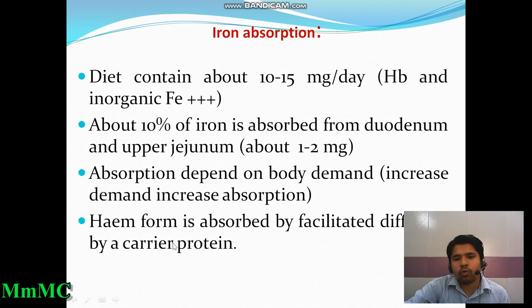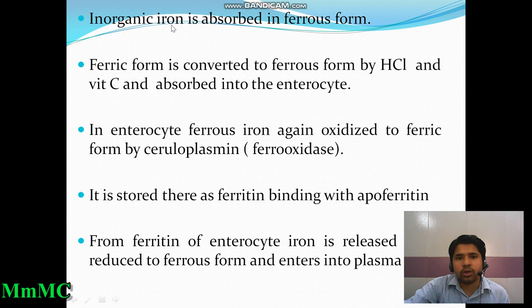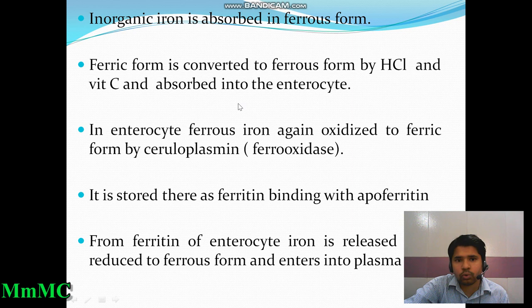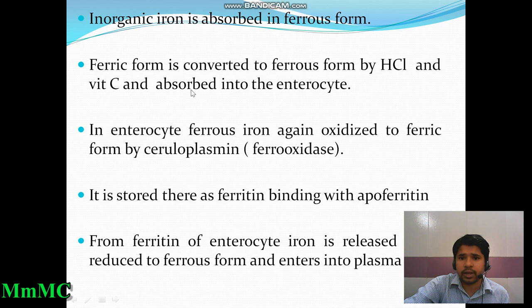The heme form is absorbed by facilitated diffusion via a carrier protein. Inorganic iron is absorbed in the ferrous form; the ferric form is first converted to ferrous by hydrochloric acid and vitamin C (ascorbic acid) before it is absorbed into the enterocytes. This is very important: ferrous form is required for absorption, and HCl and vitamin C are necessary for that conversion.